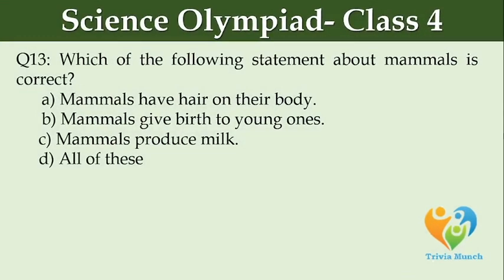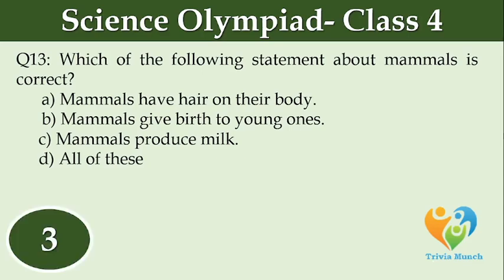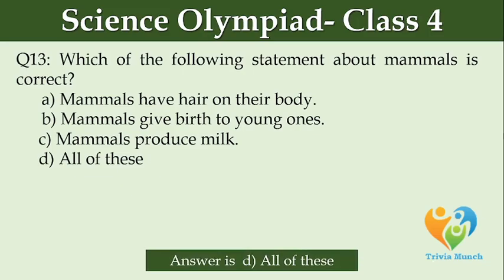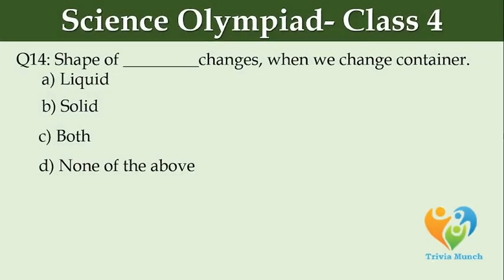Which of the following statements about mammals is correct? Option A: mammals have hair on their body. Option B: mammals give birth to young ones. Option C: mammals produce milk. Option D: all of these. Which of the following is correct? The shape of dash changes when we change container. Option A: liquid. Option B: solid. Option C: both. Option D: none of the above.